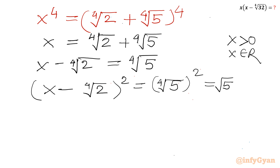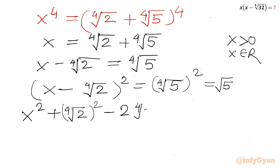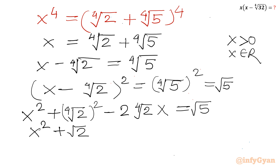On the left-hand side, applying the (A − B)² formula gives A² − 2AB + B². So I write: x² + (⁴√2)² − 2·(⁴√2)·x = √5. Now (⁴√2)² equals √2. So: x² + √2 − 2·⁴√2·x = √5.